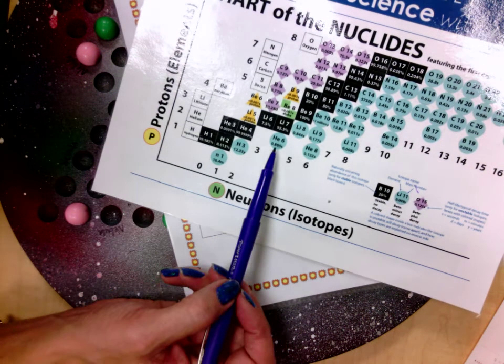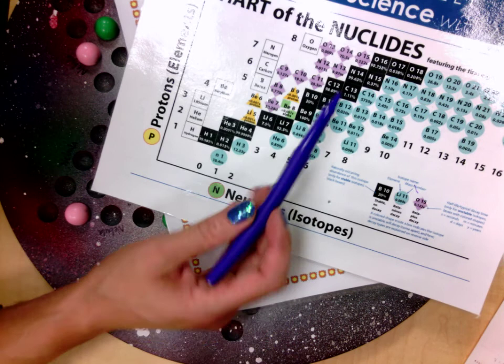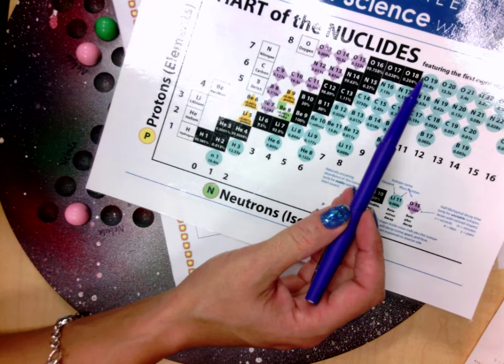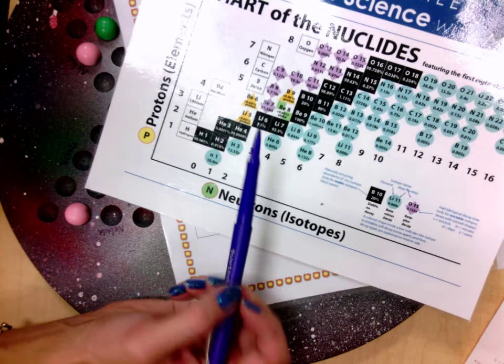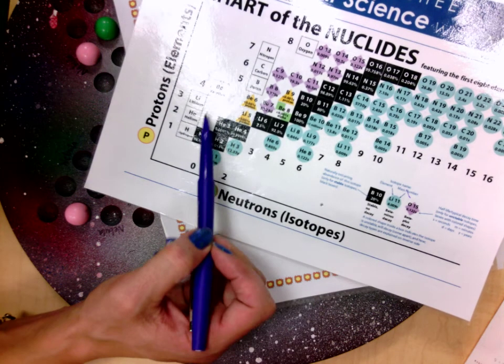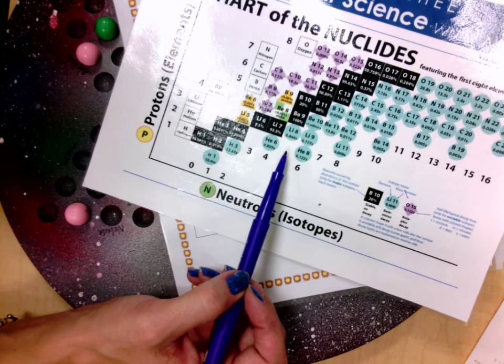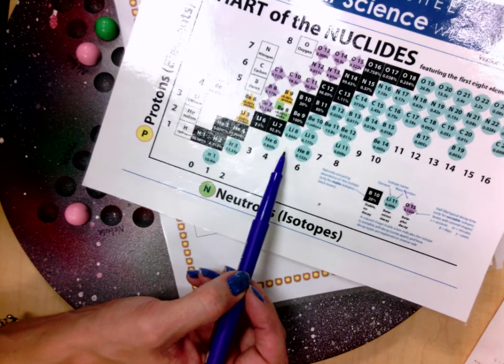You only have to do nuclear decay if you land on one of these colored symbols. The black boxes are the best place to be. Those are where you're going to be most stable. Any white spaces, if you make a roll that puts you in a white space, that's an atom that cannot exist. And so it's like losing a turn. You would skip a turn.